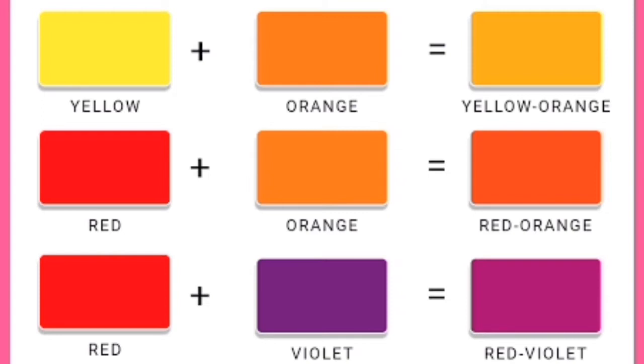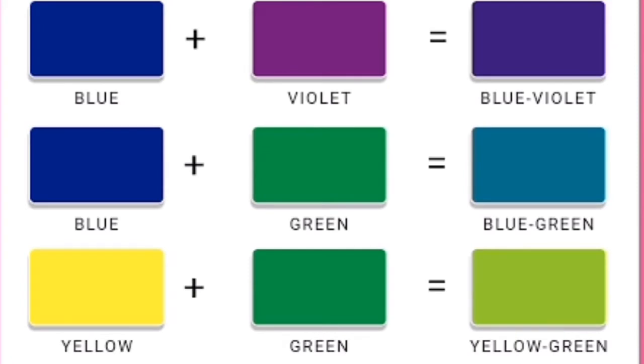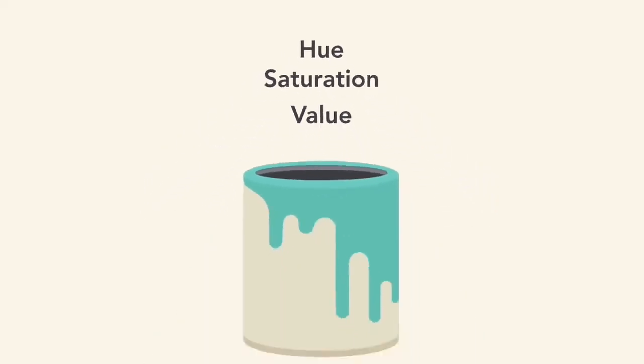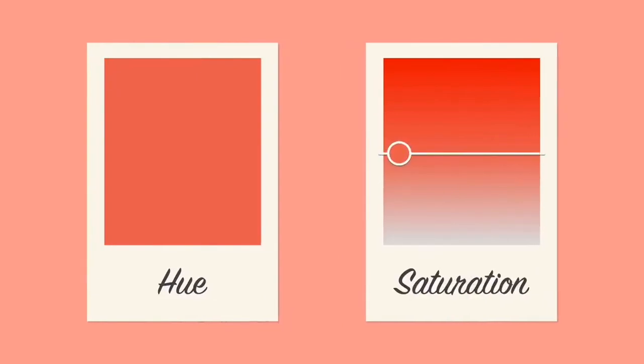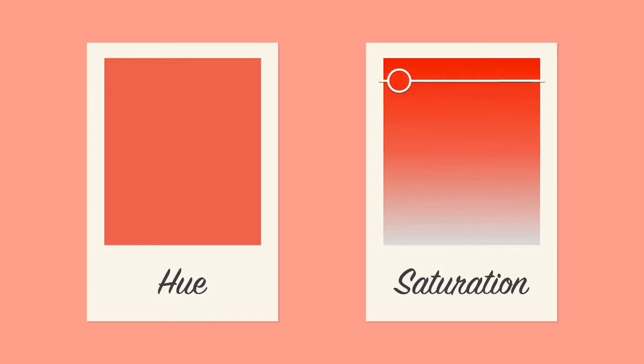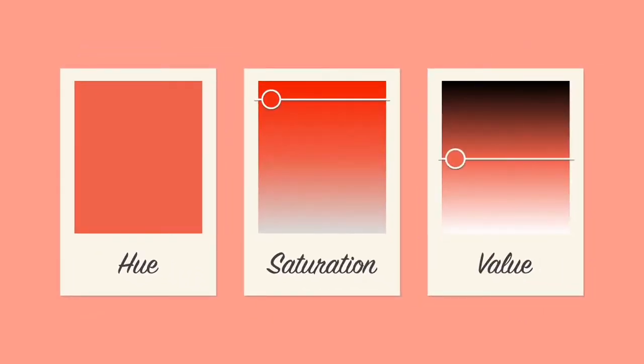Tertiary colors include yellow-orange, red-orange, red-violet, blue-violet, blue-green, and yellow-green. Color terms associated with colors include hue, saturation, and value. Hue is basically another name for color. Saturation is the intensity and purity of color as displayed in an image — the higher the saturation, the more vivid and intense it is. Value is the lightness and darkness of color.